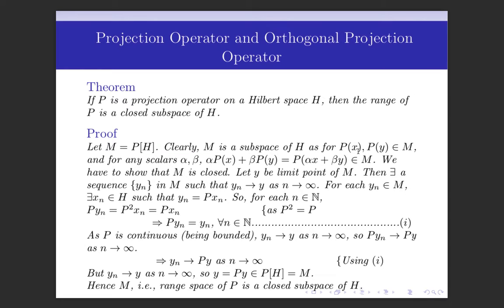Since x and y belong to H, alpha·x + beta·y belongs to H, and so alpha·Px + beta·Py is the image of some element of H. Therefore alpha·Px + beta·Py belongs to M, which implies M is a linear subspace of H. It remains to show that M is closed, that is, we have to show that M contains all its limit points. So let Y be a limit point of M.